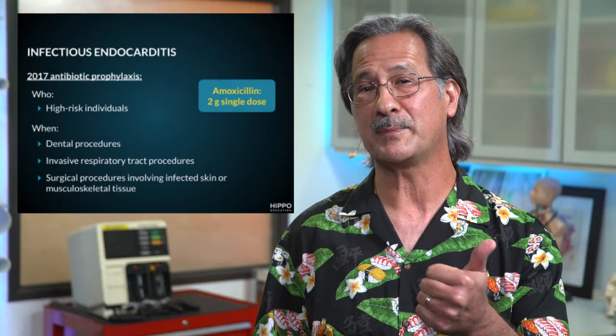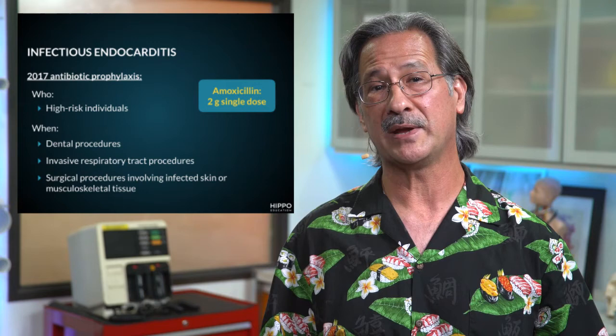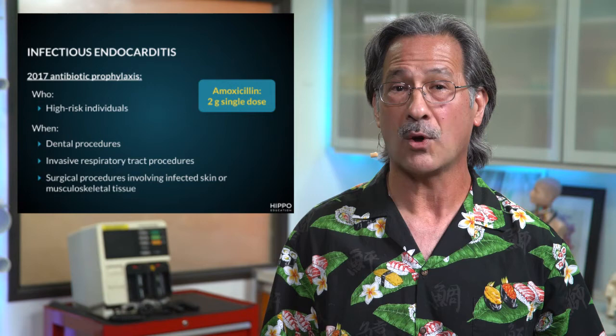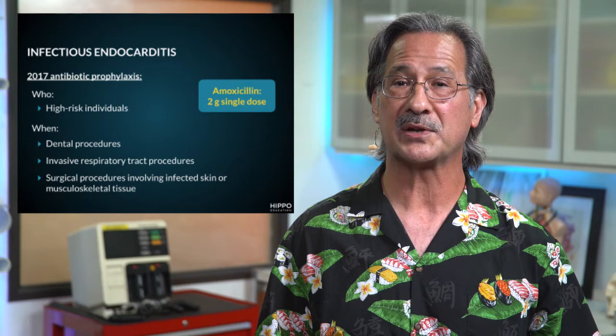So what are we going to take a look at? We're going to address who gets antibiotics and when. The who basically are patients that are at high risk. Who are these high-risk individuals? Folks with prosthetic heart valves, patients with a prior history of infectious endocarditis, patients with unrepaired cyanotic congenital heart disease, or patients with completely repaired congenital heart disease with prosthetic material or devices — we cover them for the first six months after surgery.